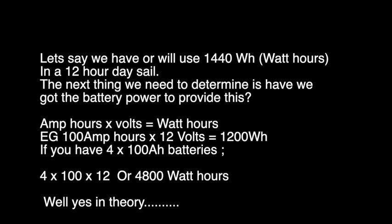Amp hours times volts equals watts. So 100 amp hour battery times 12 volts is 1200 watt hours. If you have four 100 amp batteries, that's four times 100 times 12, or 4,800 watt hours. Yes? Well, yes, in theory.